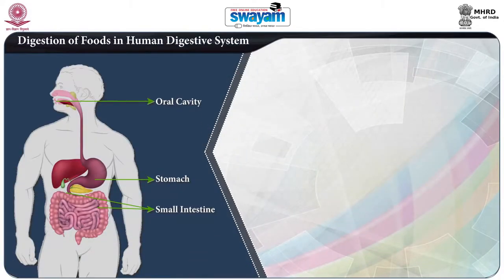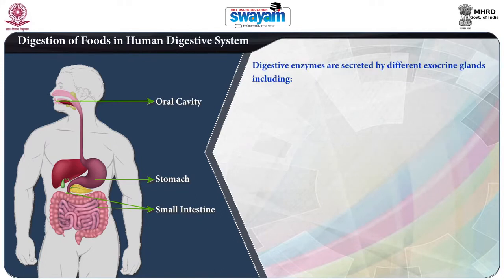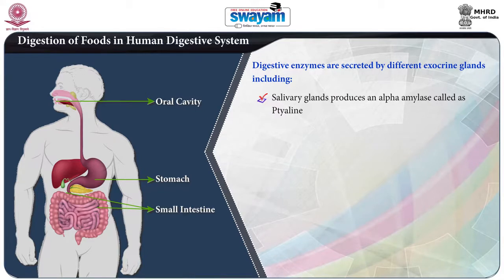Considering digestion of food in the human digestive system, digestive enzymes of diverse specificities are secreted in the human digestive tract to achieve maximum breakdown and maximum utilization of ingested food. The main sites of digestion are the oral cavity, the stomach, and the small intestine. Digestive enzymes are secreted by different exocrine glands, including salivary glands present in the oral cavity, which produce an alpha-amylase enzyme called ptylin.